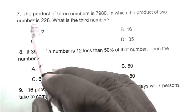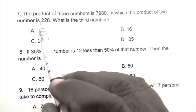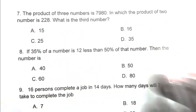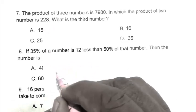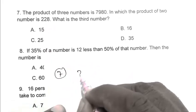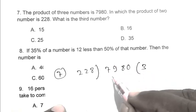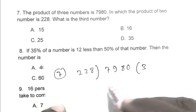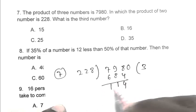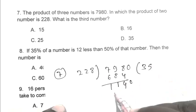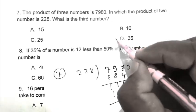Question number 7. The product of 3 numbers is 7,980, in which the product of 2 numbers is 228. What is the third number? So friend, we can divide 7,980 by 228: 7,980 divided by 228 equals 35. So friend, my answer is 35. D is the right answer.